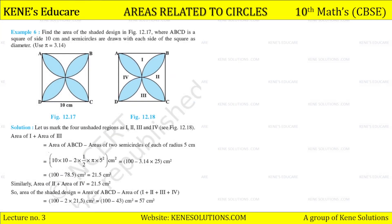Here also see, find the area of the shaded region design where ABCD is a square of side 10 cm and the semicircles are drawn with each side of the square as diameter. See here, let's mark the 4 unshaded regions 1, 2, 3, 4 as shown in the figure. Area of ABCD minus area of 2 semicircles of each of radius 5 cm.